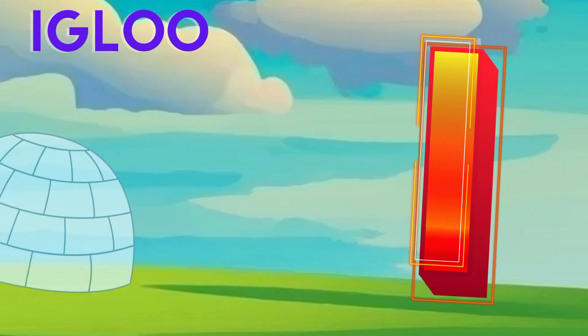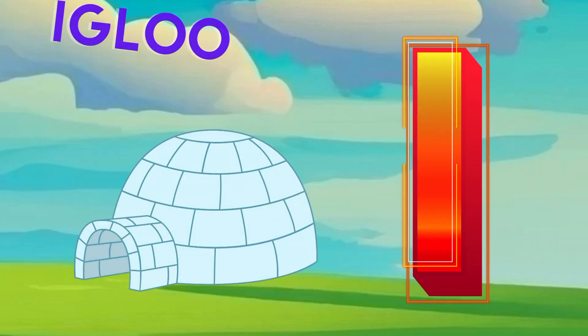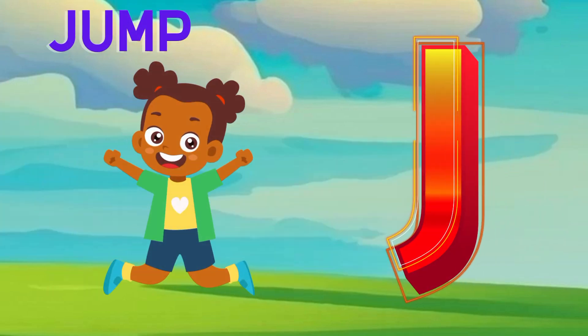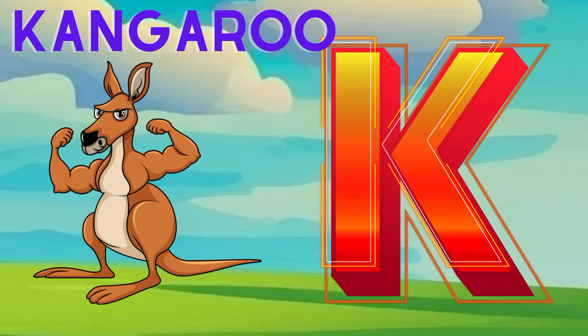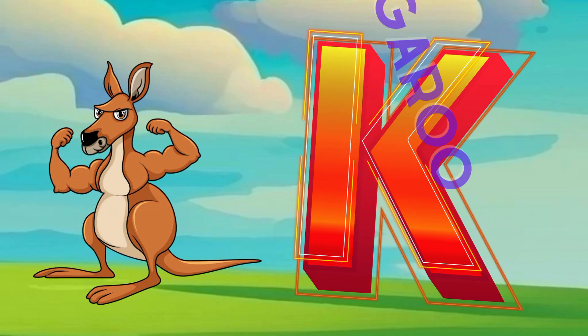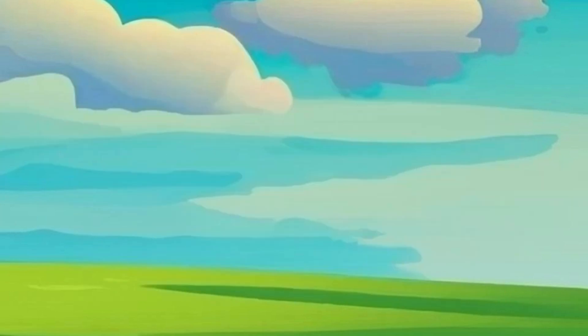I is for igloo, i-i-igloo. J is for jump, j-j-jump. K is for kangaroo, k-k-kangaroo. L is for lion, l-l-lion.